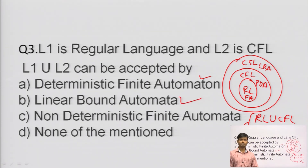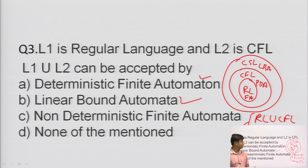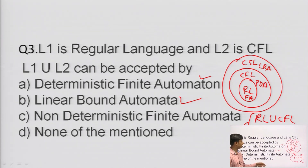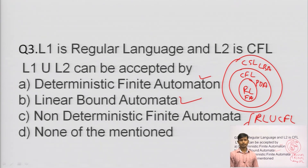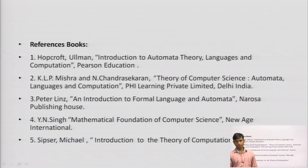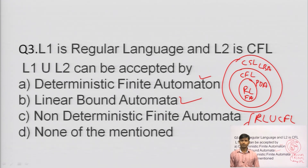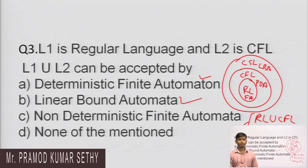Regular language is accepted by finite automata, push down automata, Linear Bounded Automata, and also Turing machine. The Turing machine is the highest machine that can compute all languages — regular, context-free, context-sensitive, recursive, and recursively enumerable. Reference books include Michael Sipser or Hopcroft. This topic has maximum theory-type questions in GATE and NET exams. Thank you.